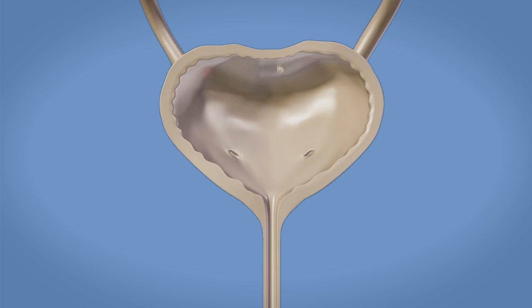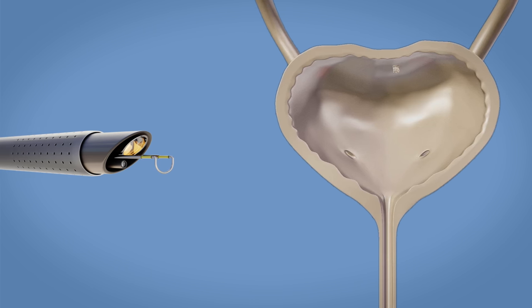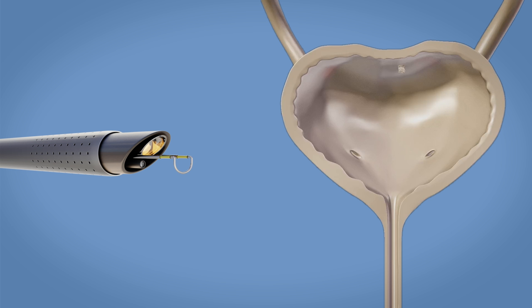During this procedure, a thin tube called a resectoscope is inserted through your urethra, then into your bladder. This resectoscope has a cutting tool, a light, and a camera at the end.